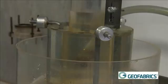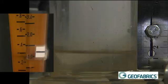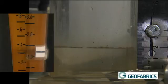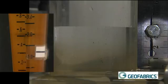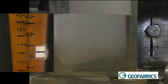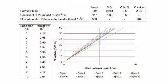The water flow is turned on and the head height difference in millimetres at five different flow rates is recorded per specimen. Once all five specimens are tested, the results are used to calculate the permittivity in reciprocal seconds, coefficient of permeability in metres per second, and the flow rate in litres per metre squared per second at a head height of 100 millimetres.